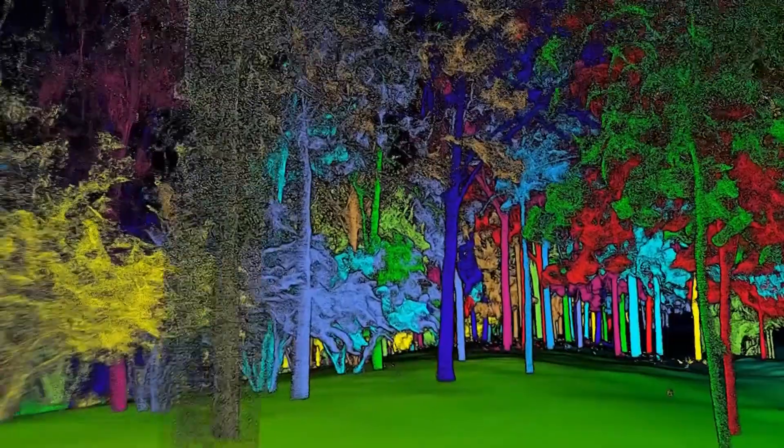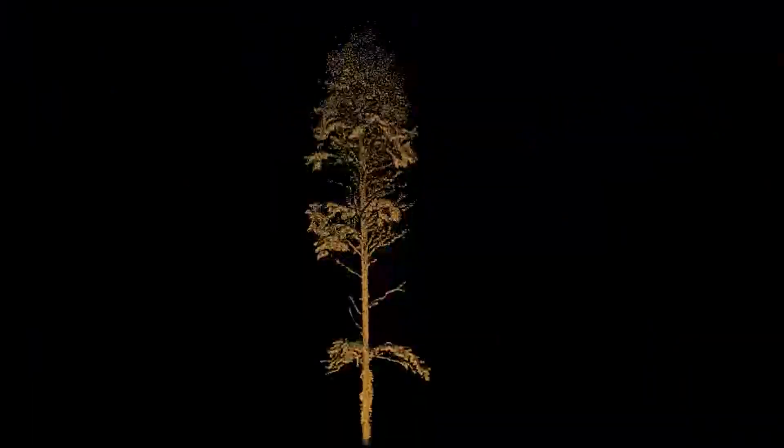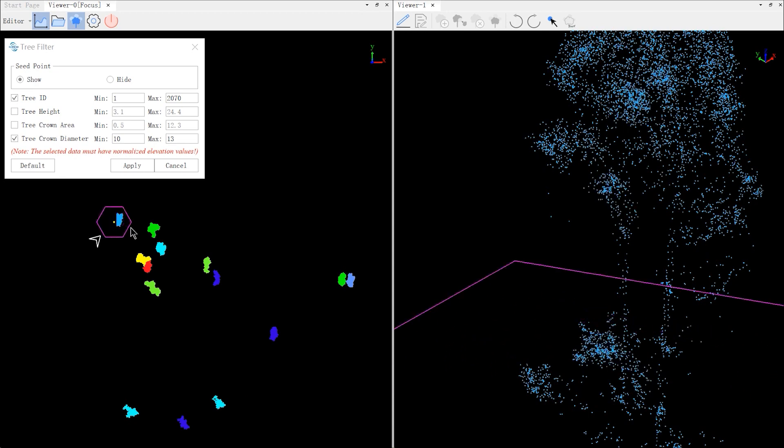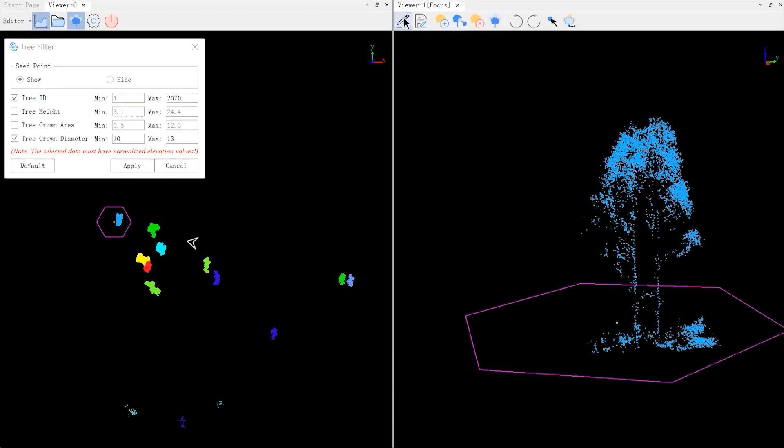Forestry module automatically obtains the position, tree height, crown width, diameter at breast height, height under branches, trunk volume and other attributes of a single tree. Provides a variety of forest parameter calculation functions.